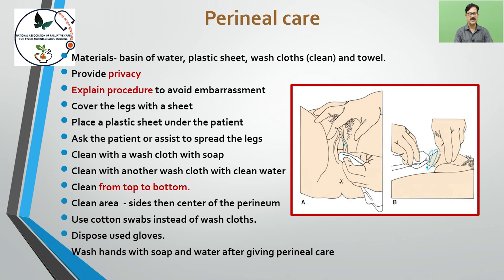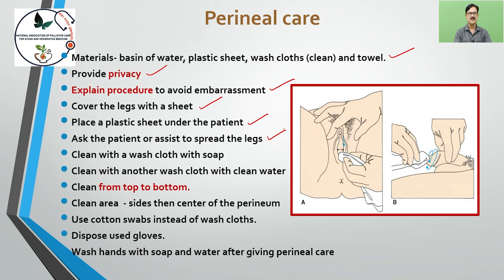For perineal care, materials needed are a basin of water, plastic sheet, wash cloths, and towel. Privacy is very important. Explain the procedure to avoid embarrassment. Cover the legs with a sheet and place a plastic sheet under the patient. Ask the patient or assist to spread the legs. Clean with soap and a wash cloth, then with another wash cloth and clean water. Clean from top to bottom, cleaning the sides then the center of the perineum. Use cotton swabs instead of wash cloth. Dispose of used gloves and wash hands with soap and water after giving perineal care.